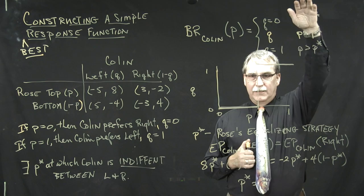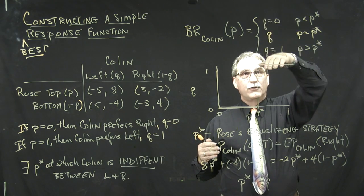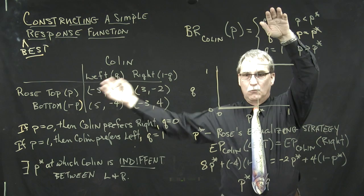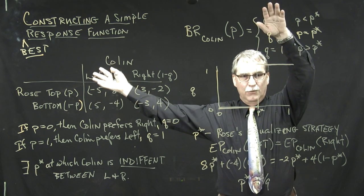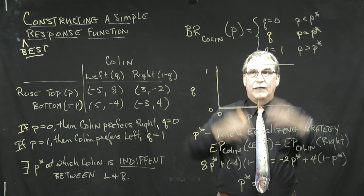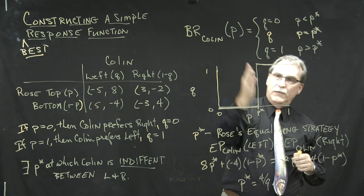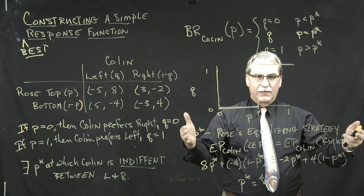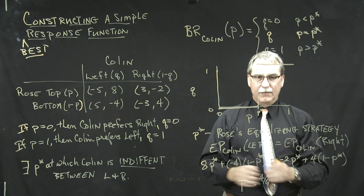If Rose is doing something in this column, that's our input, this function, these outputs, tell us what Colin's best response to that is. What does he do to maximize his payoff? That's the best response function. The key to knowing where this piece of the graph is, is to be able to calculate Rose's equalizing strategy, which we've done here.